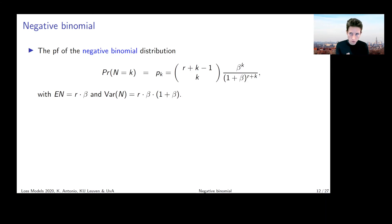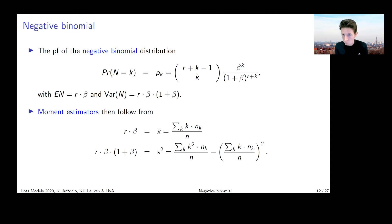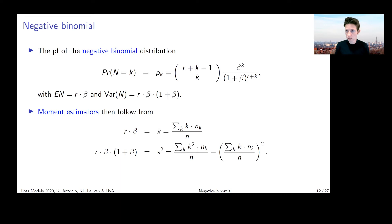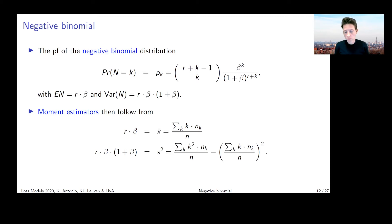The negative binomial is a count distribution using two parameters r and beta. If you want to fit it to a given sample, you could start from moment estimators: the mean of the negative binomial is r times beta, and the variance is r times beta times one plus beta. Setting the theoretical mean and variance equal to the empirical ones, you can solve for r and beta — that's the moment approach to getting suitable starting values.